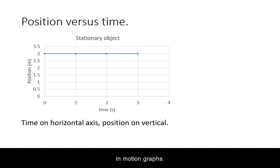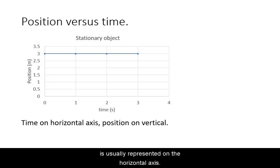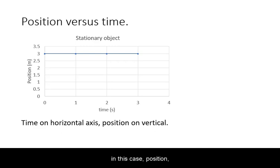In motion graphs, the time is usually represented on the horizontal axis. The motion quantity, in this case position, is represented along the vertical axis.